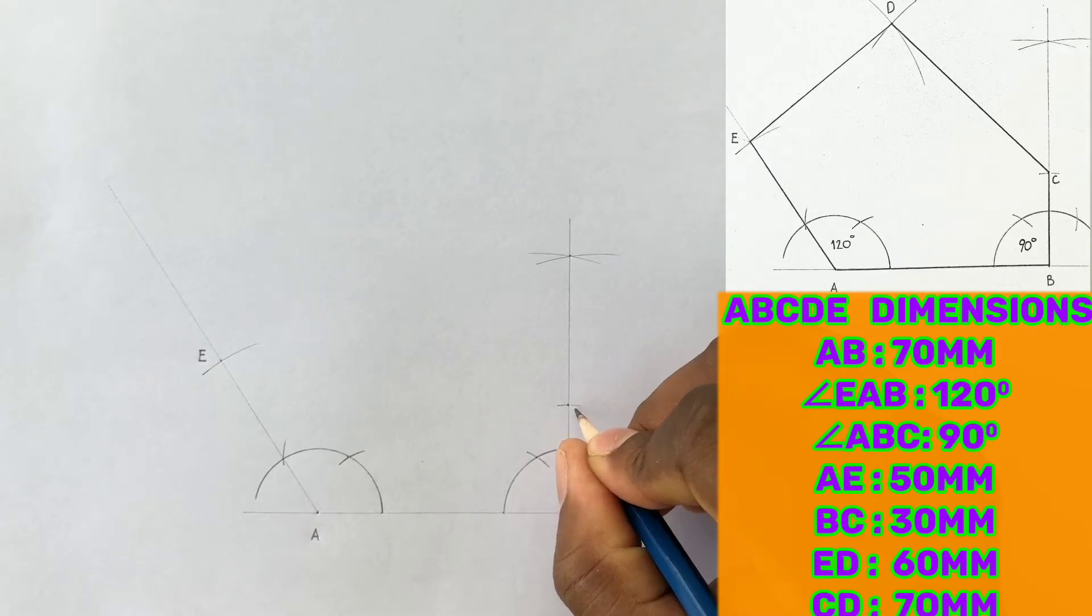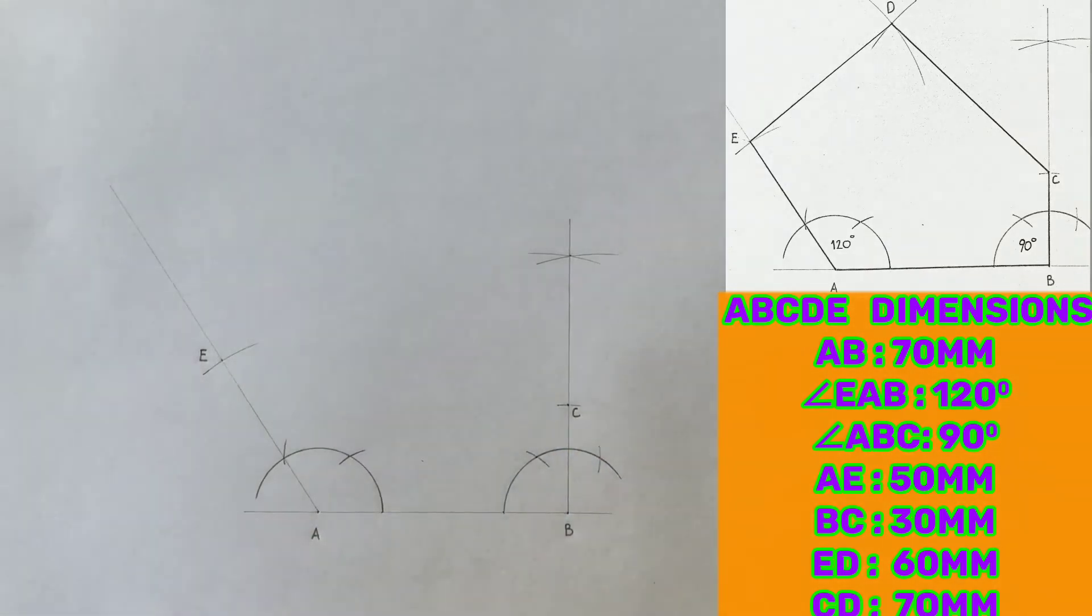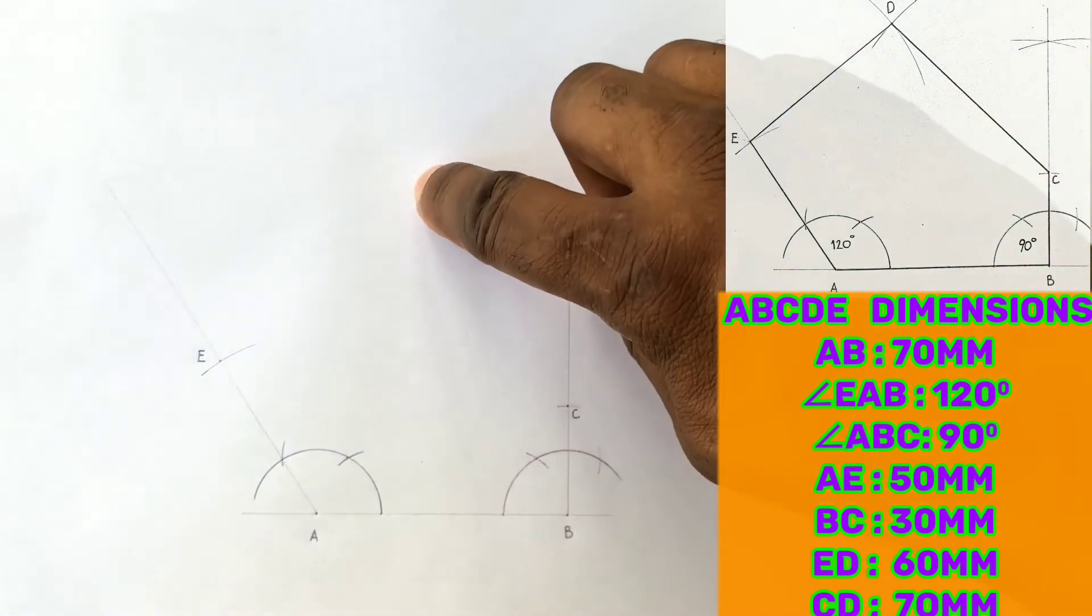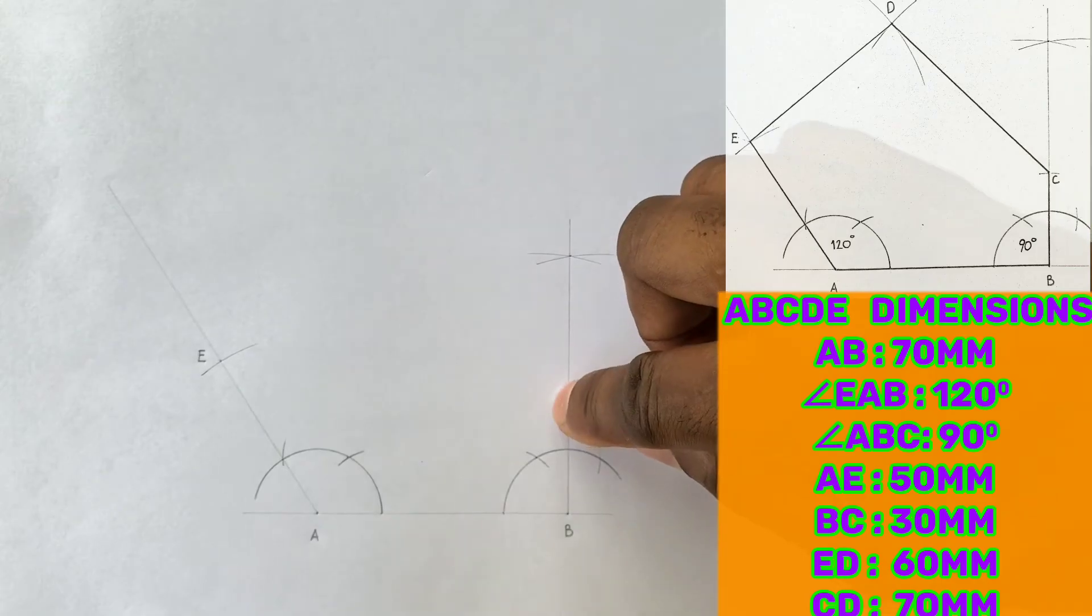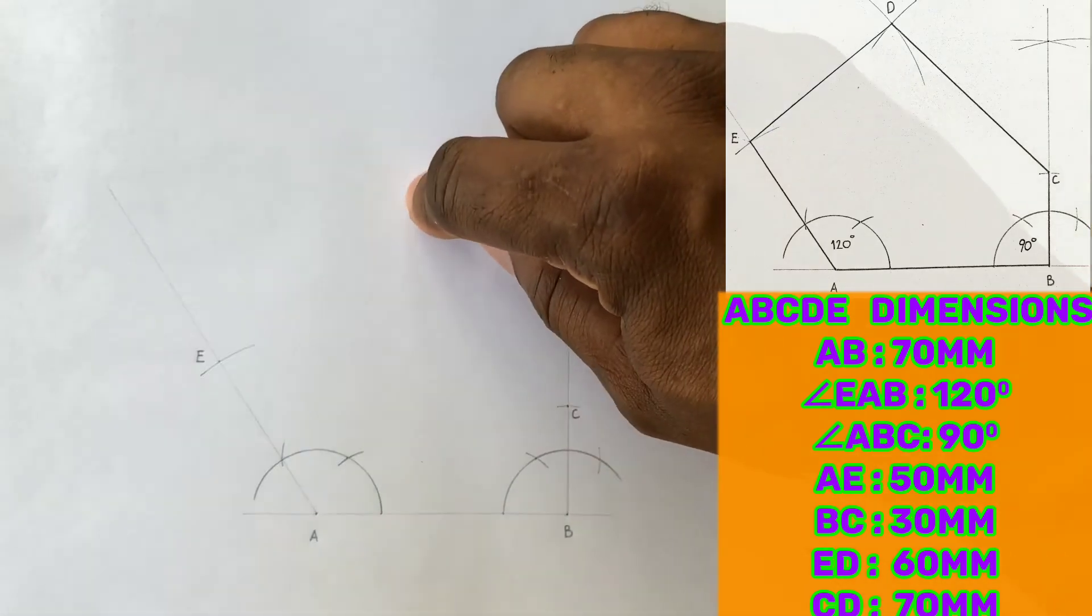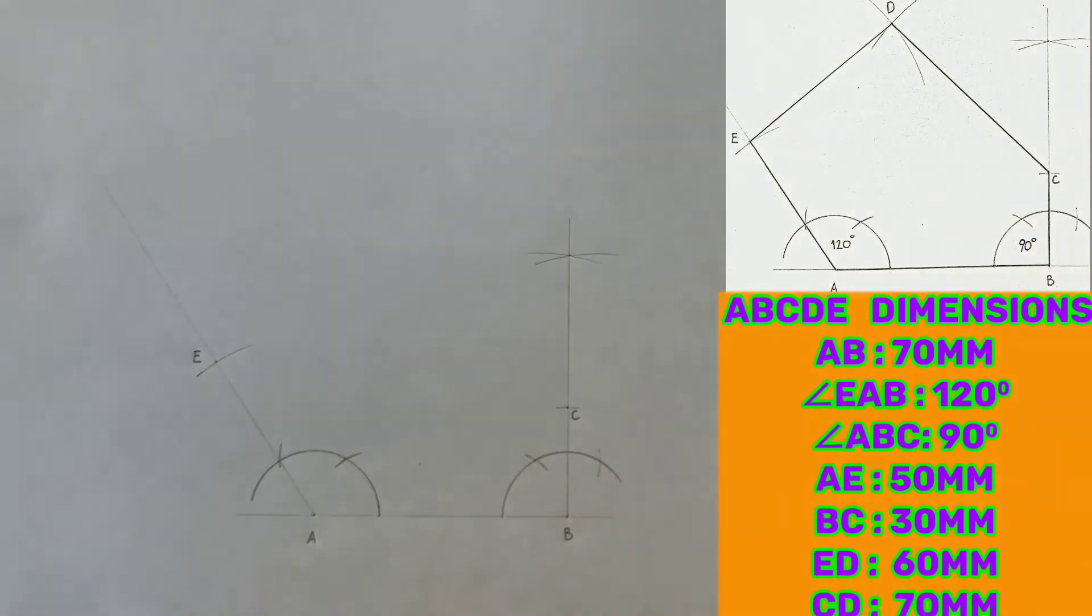Now without any further angle given, you still have enough information to locate point D by using the length of C to D or E to D. We can locate this point D.